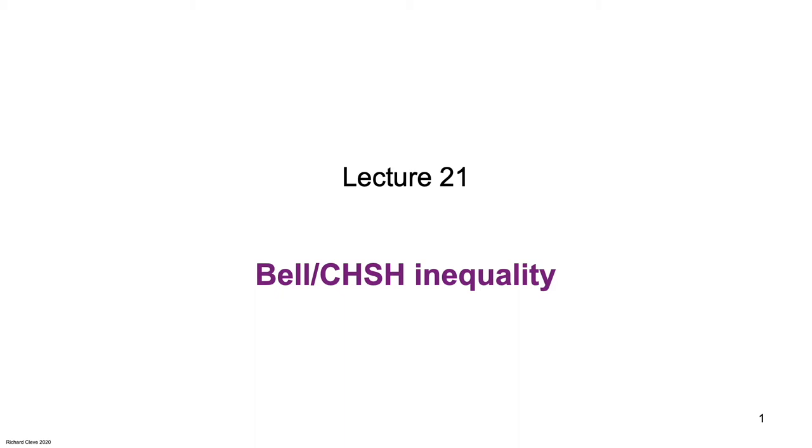The version that we'll consider was discovered shortly after John Bell's groundbreaking paper and is called the CHSH inequality after its authors Clauser, Horn, Shimoni, and Holt.